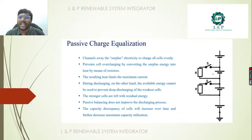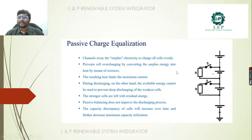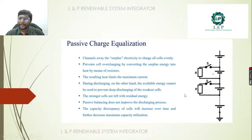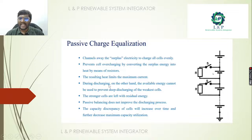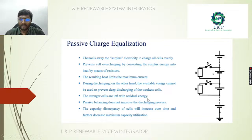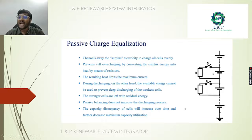In the passive charge equalization method, resistors are used along with switches across the battery terminals. With respect to the voltage across individual cells, it tries to evenly charge all the individual cells inside the battery. It also prevents overcharging, though the resulting heat limits the maximum current. During discharging, the available energy cannot be used to prevent deep discharging of the weakest cells. Overall, passive charge equalization improves the charging process.